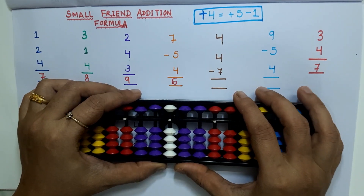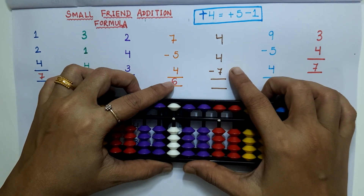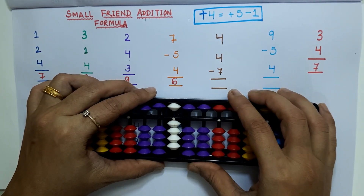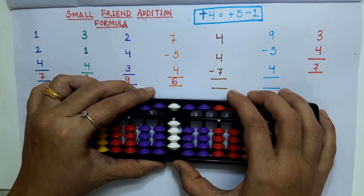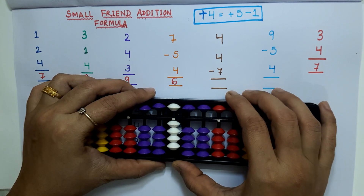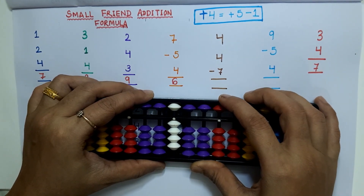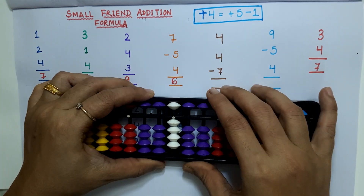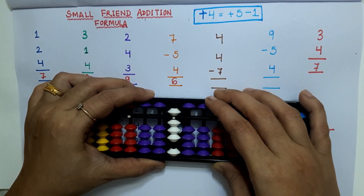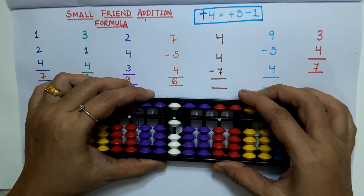Now it's more fun to solve these examples, isn't it? Next example is 4 plus 4 minus 7. For 4 plus 4, we don't have 4 bits available at the lower deck, so using the upper deck: plus 4 equals plus 5 minus 1, then minus 7. The answer is 1.